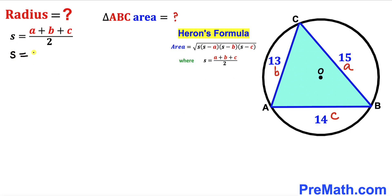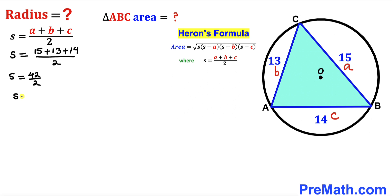So s = (15 + 13 + 14) / 2. Adding the numerators gives us 42 divided by 2. Therefore our s value turns out to be 21.